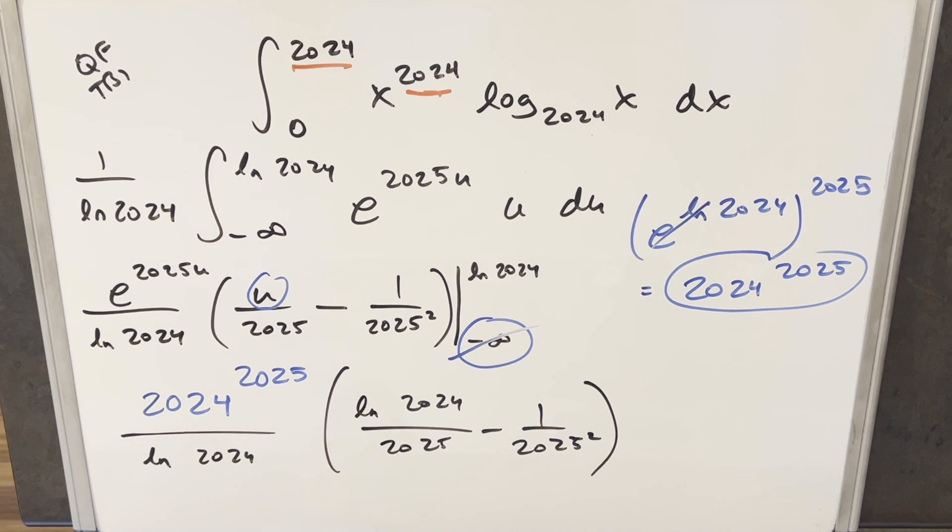And so for my final solution to this, we just get 2024 to the 2025 over ln 2024 times ln 2024 over 2025 minus 1 over 2025 squared. And that's it.